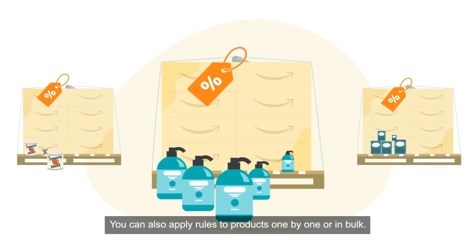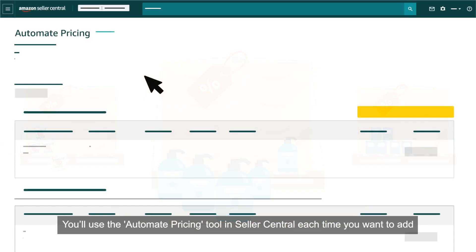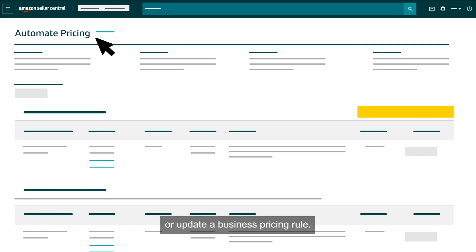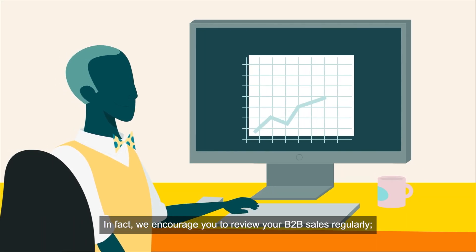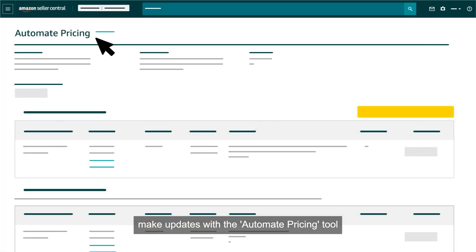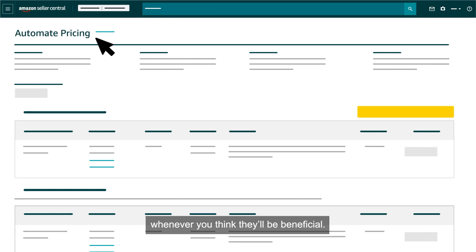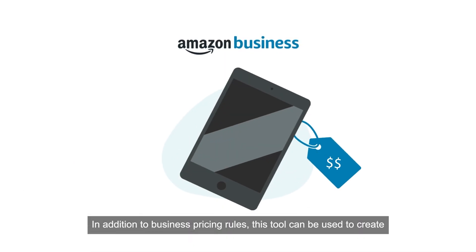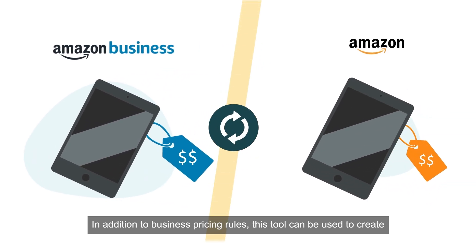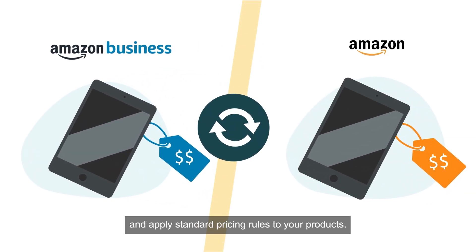You can apply a business pricing rule to one or more products, either one by one or in bulk. You'll use the Automate Pricing Tool in Seller Central each time you want to add or update a business pricing rule. We encourage you to review your B2B sales regularly and make updates with the Automate Pricing Tool whenever you think they'll be beneficial. In addition to business pricing rules, this tool can be used to create and apply standard pricing rules to your products.